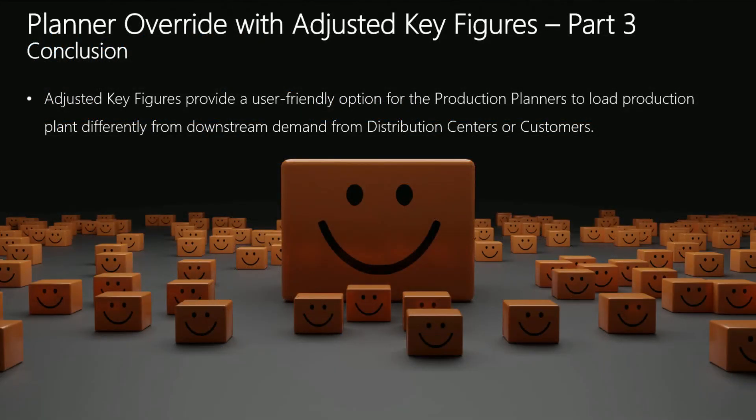In conclusion, adjusted key figures provide a user-friendly option for production planners to override production receipts. They can model supply constraints known to them, independent of the downstream demand from distribution centers.